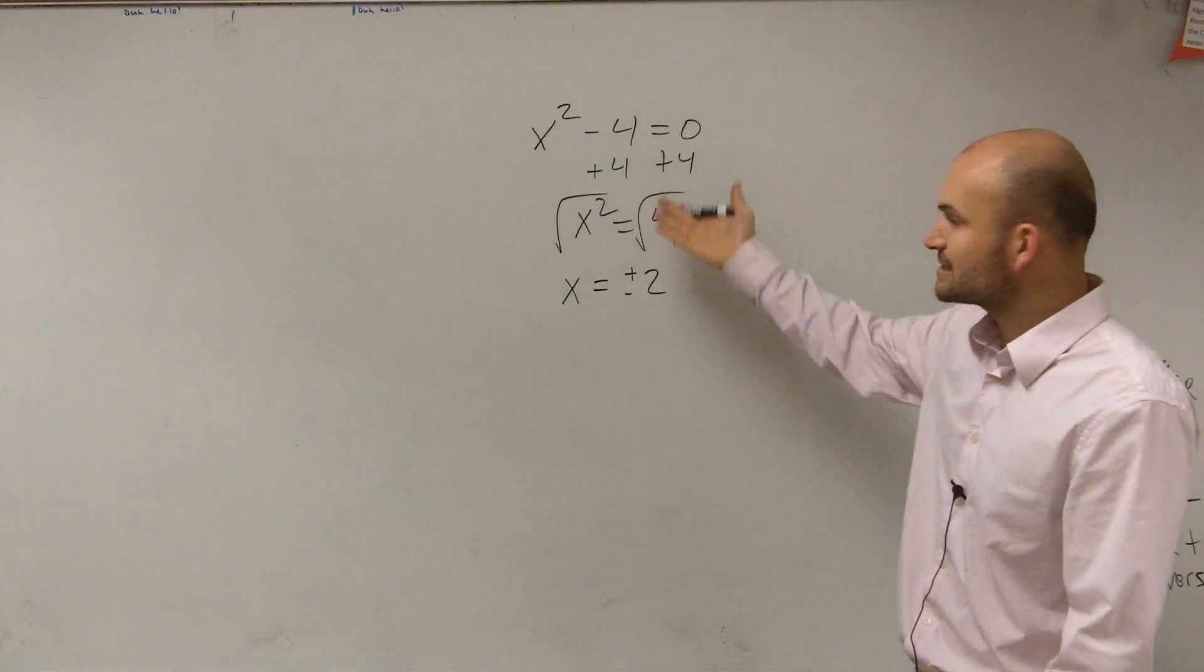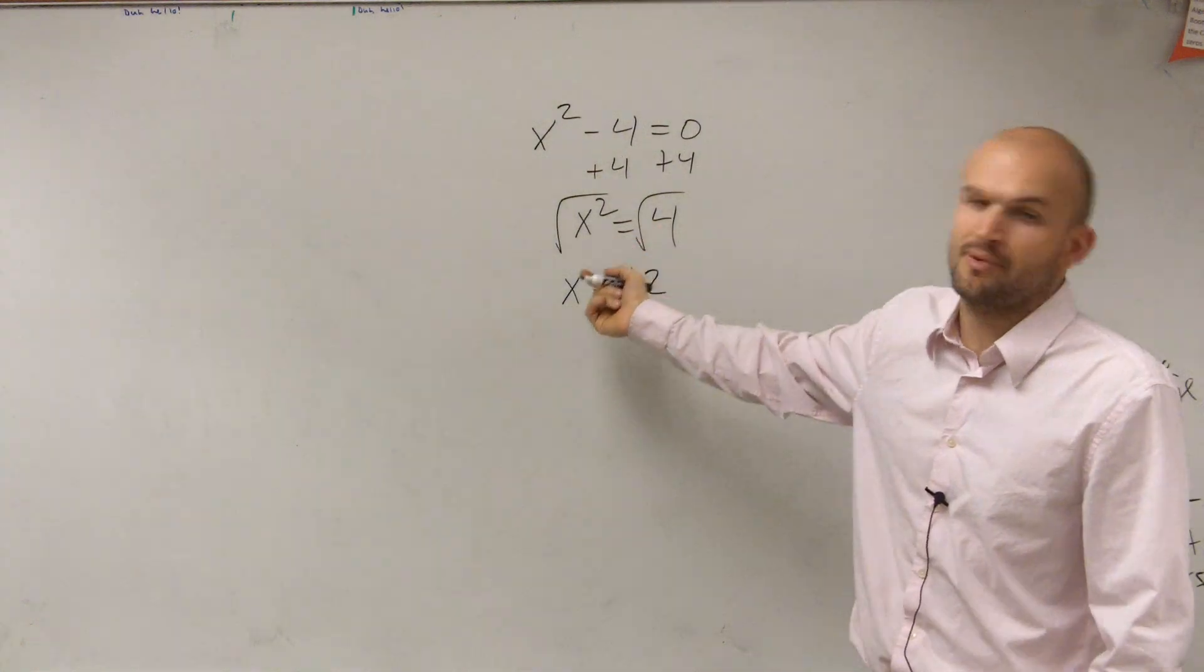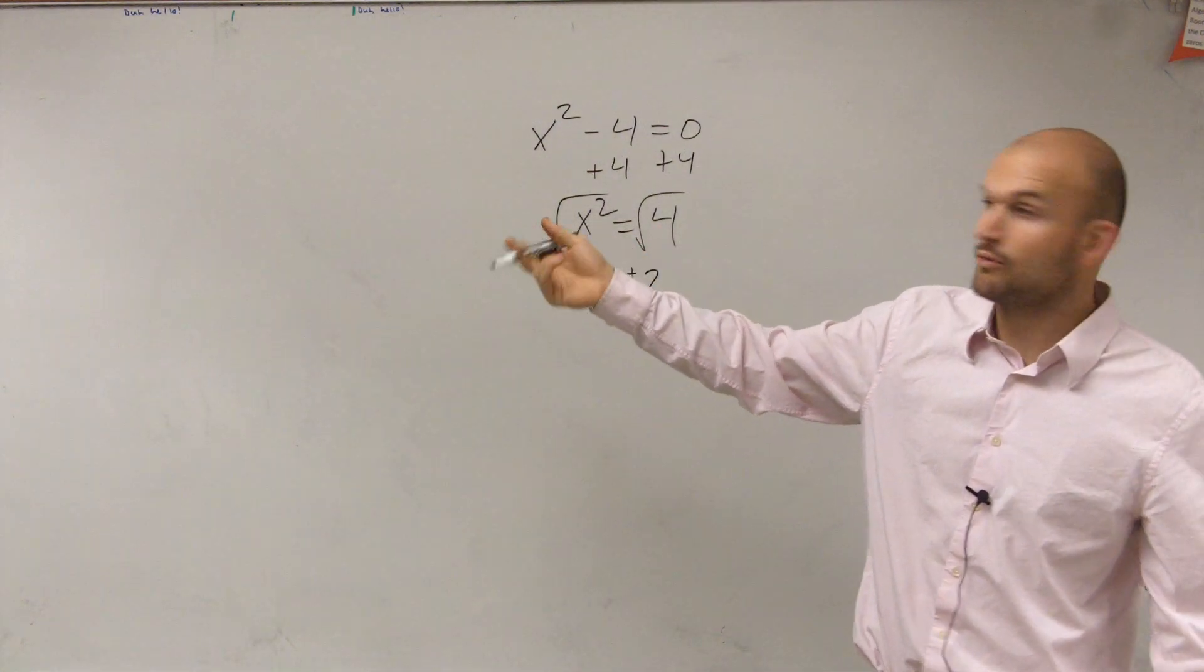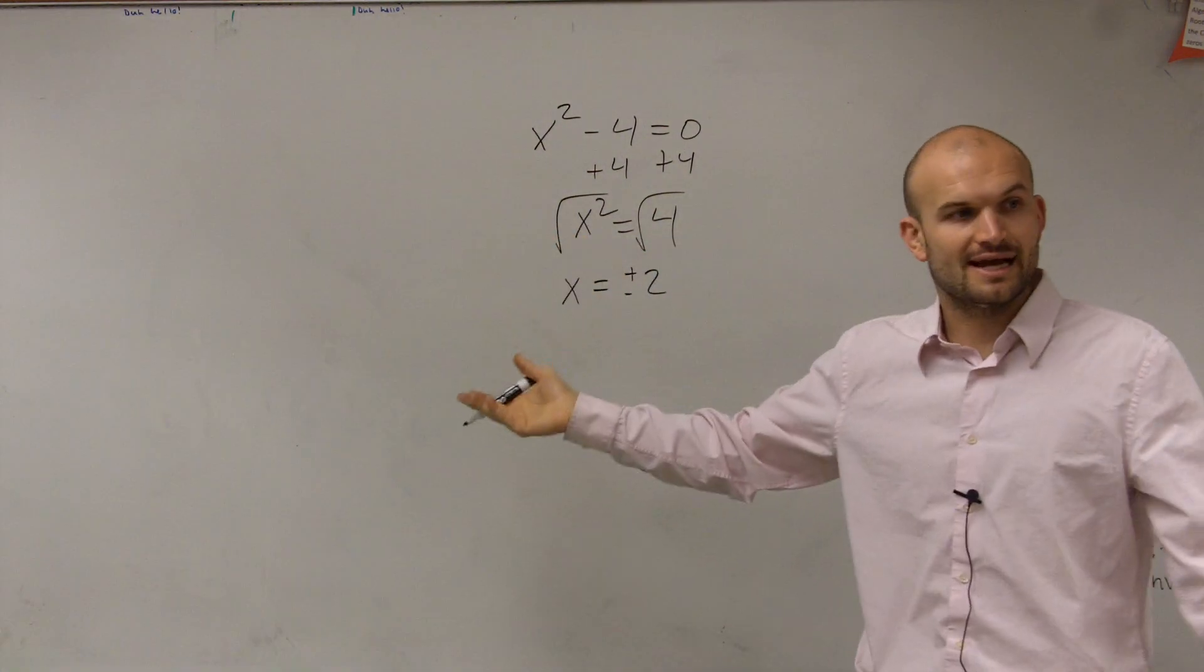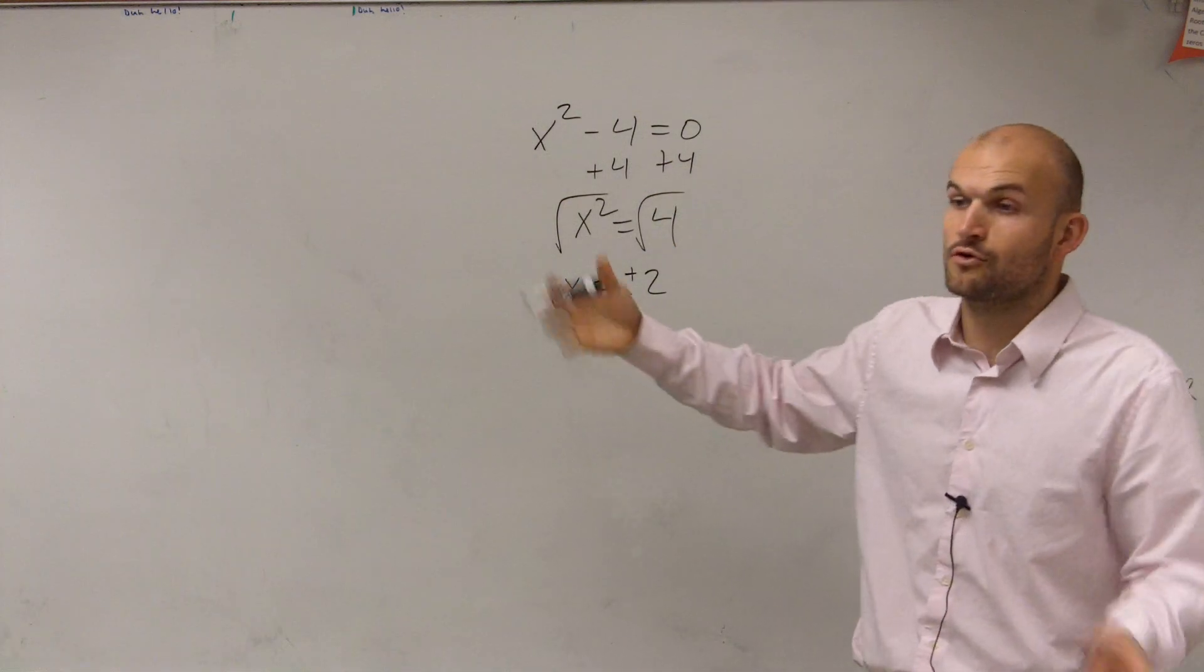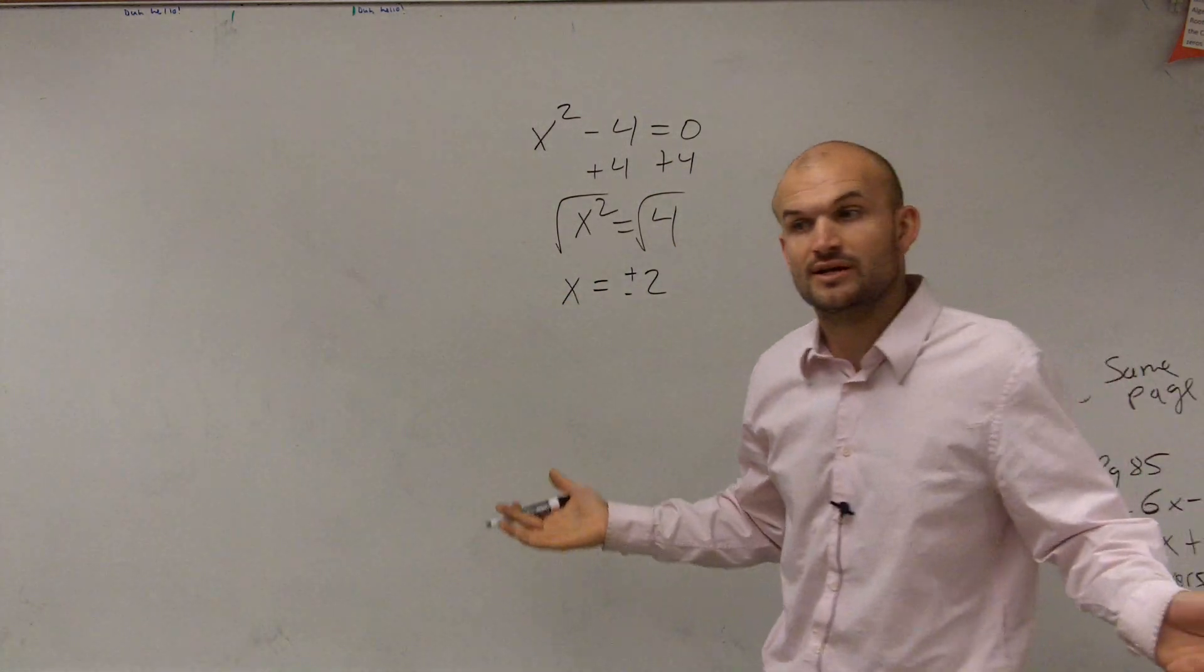Because x could be positive or negative 2, because positive 2 squared gives me 4. And positive 2 squared minus 4 gives me 0. And negative 2 squared gives me 0, right?